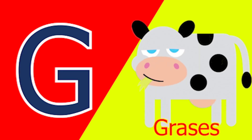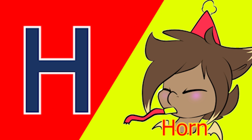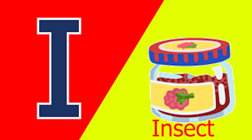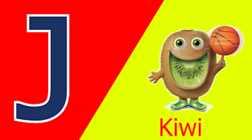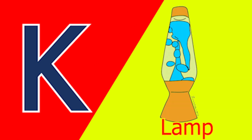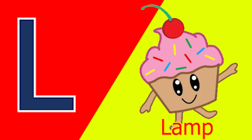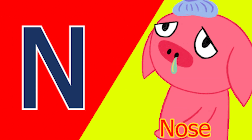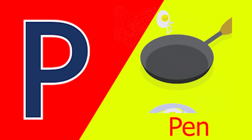G for glass and H for horn. I for insect, J for jam, K for kite, L for lamb, M for mud, N for nose, O for ox and P for pan.